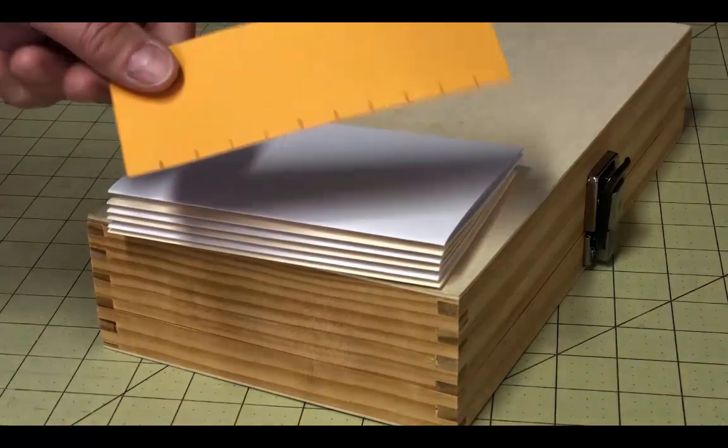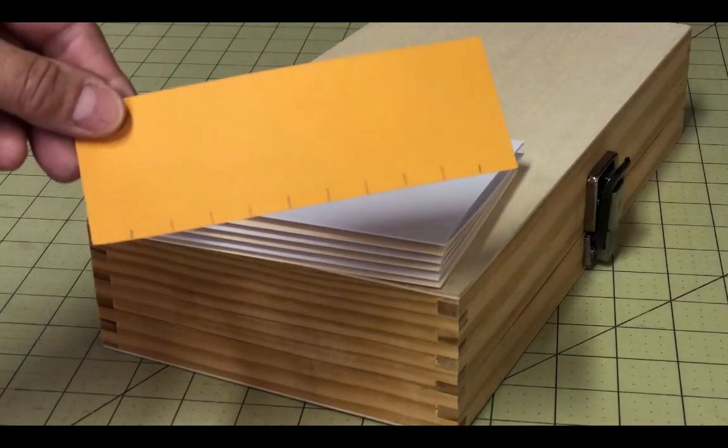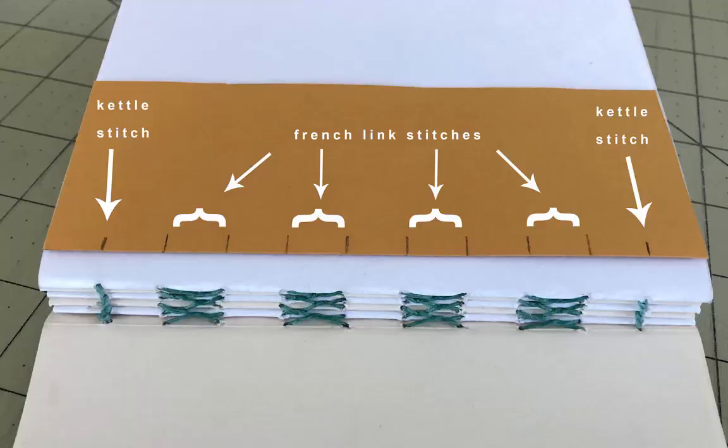Next you'll want to mark and pre-punch the sewing holes. I always create a marking template on a scrap piece of paper for this step. For this stitch you'll want an even number of holes. Figure out how many linking stitches you'll want and then add one more hole at each end for the kettle stitches. The linking stitches by themselves tend to make for a very loose binding, so the kettle stitches will help keep the book block together.